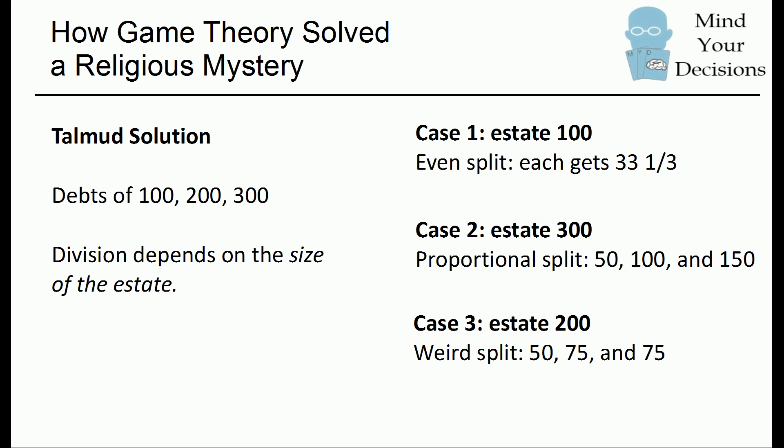This really is very curious. Off the top of my head, I can't think of any justification for it in any common setting. This is clearly not an even split of the money — it's not 200 divided three ways. It's also not a proportional split where the person with the bigger debt claim gets more money. You have this weird thing where the person with a debt of 100 gets 50, and the other two people just get 75 each. This was the religious mystery: why would the Talmud have these divisions? It was so puzzling that some academics actually said it was just a transcription error — there's no way these three cases could have been compatible. There just doesn't seem to be any logic to it.